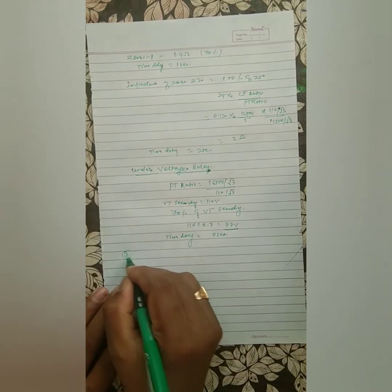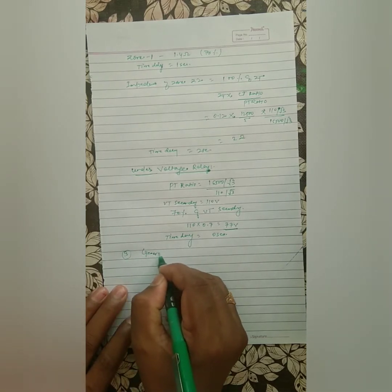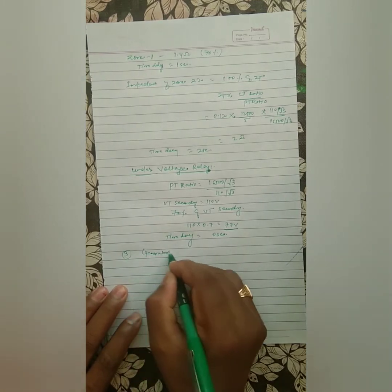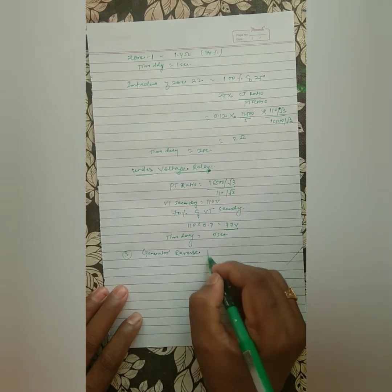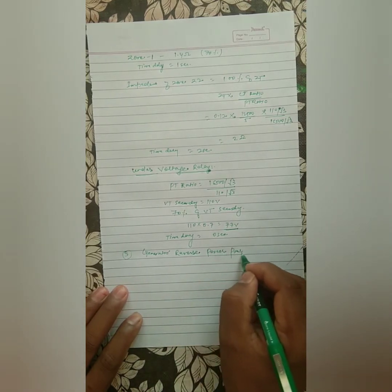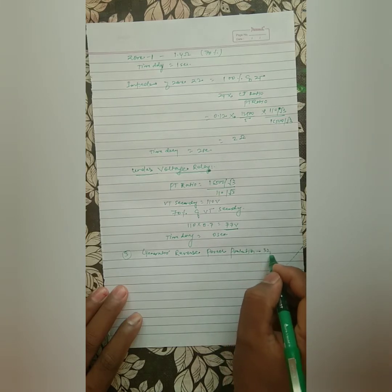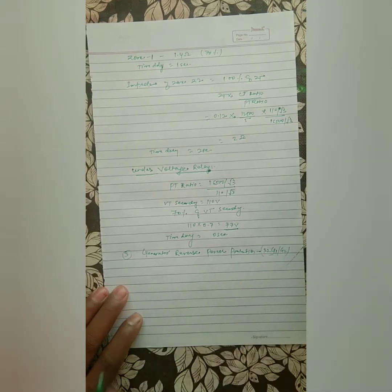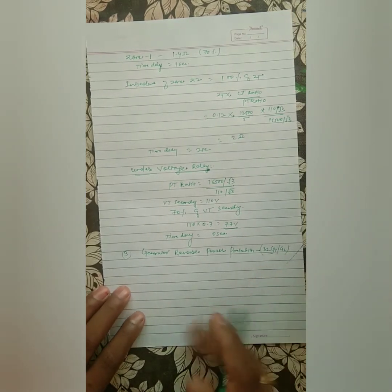The third protection we are going to calculate is generator reverse power protection, designated 32G1 and 32G2 for Stage 1 and Stage 2.